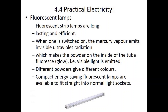Next we have fluorescent lamps, which are shaped like long tubular strips and are very long-lasting and efficient. When switched on, mercury vapour inside the tube is charged and emits invisible ultraviolet radiation. This radiation makes the powder on the inside of the tube glow, producing visible light that can be white or coloured depending on the powder used. These lamps are compact, energy-saving, and fit into normal household light sockets.